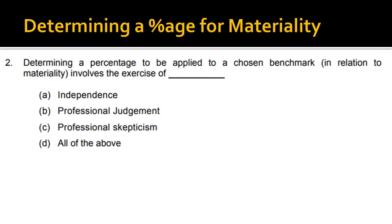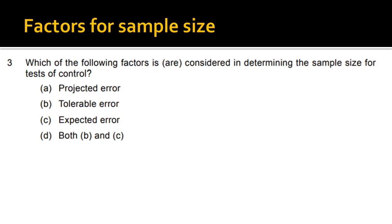Next: determining a percentage to be applied to the chosen benchmark in relation to materiality involves the exercise of professional judgment. It is the auditor's judgment as to what percentage could be material — for example, 10%, 20%, 15%, or 2%. That is based on the auditor's judgment and experience, which determines what percentage to use when checking the sample size.